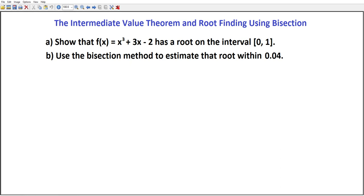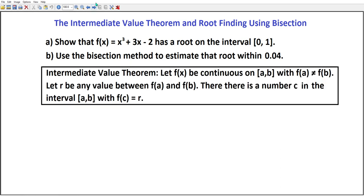To accomplish this, we will need a theorem called the Intermediate Value Theorem, and what it says is if f(x) is a continuous function on the closed interval [a,b] with f(a) ≠ f(b) and r is any value between f(a) and f(b), then someplace on that interval there is a number c where the function value is that value r.